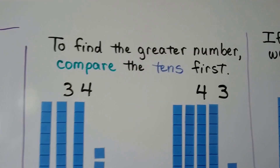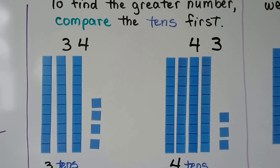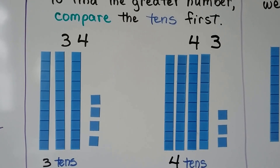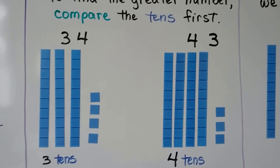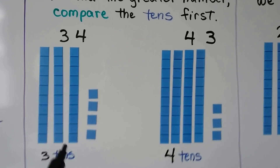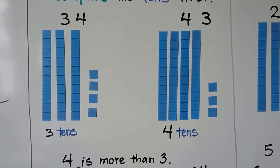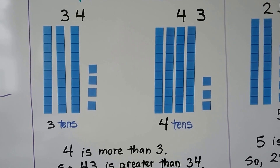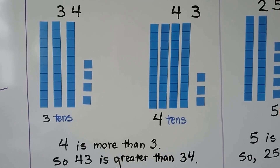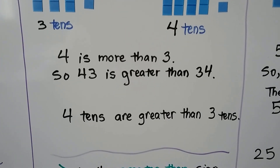To find the greater number, compare the tens first. Here we have 34 and 43. We look at how many tens they have. 34 has 3 tens. 43 has 4 tens. 4 is more than 3, so 43 is greater than 34. 4 tens are greater than 3 tens.